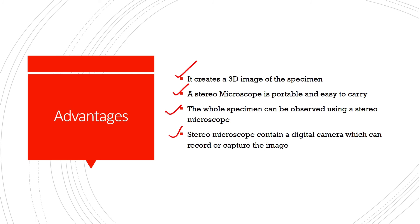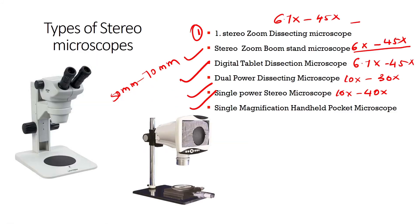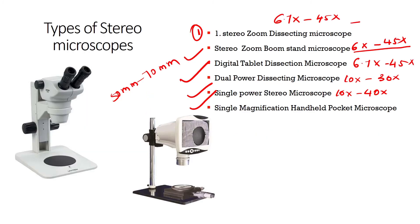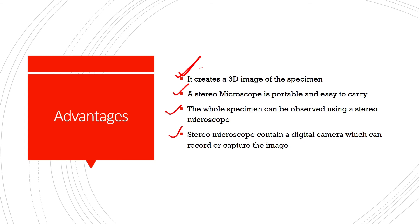The advantages of a stereo microscope include: first, it creates a 3D image of the specimen because it has two eyepieces and two objectives, allowing the specimen to be viewed from different angles. Second, it is portable and easy to carry. Third, the whole specimen can be observed. Fourth, it contains a digital camera which can record or capture images of the specimen.